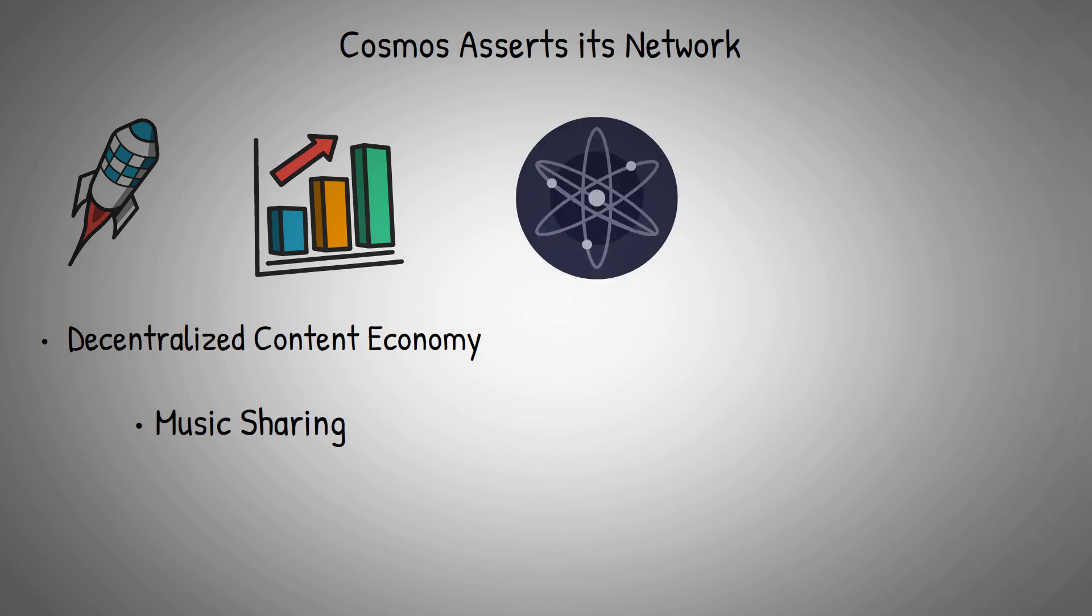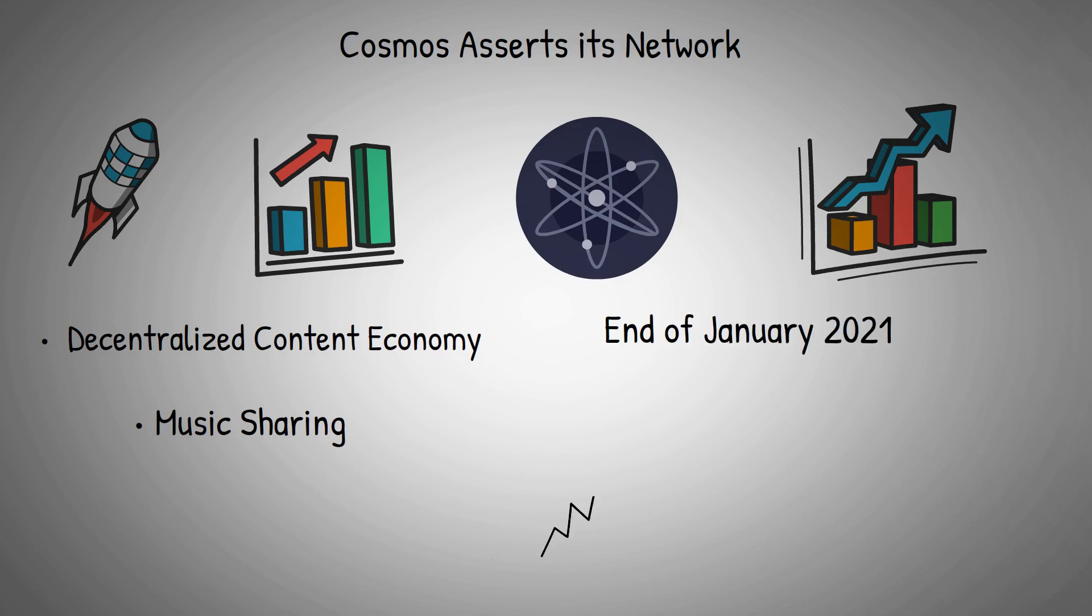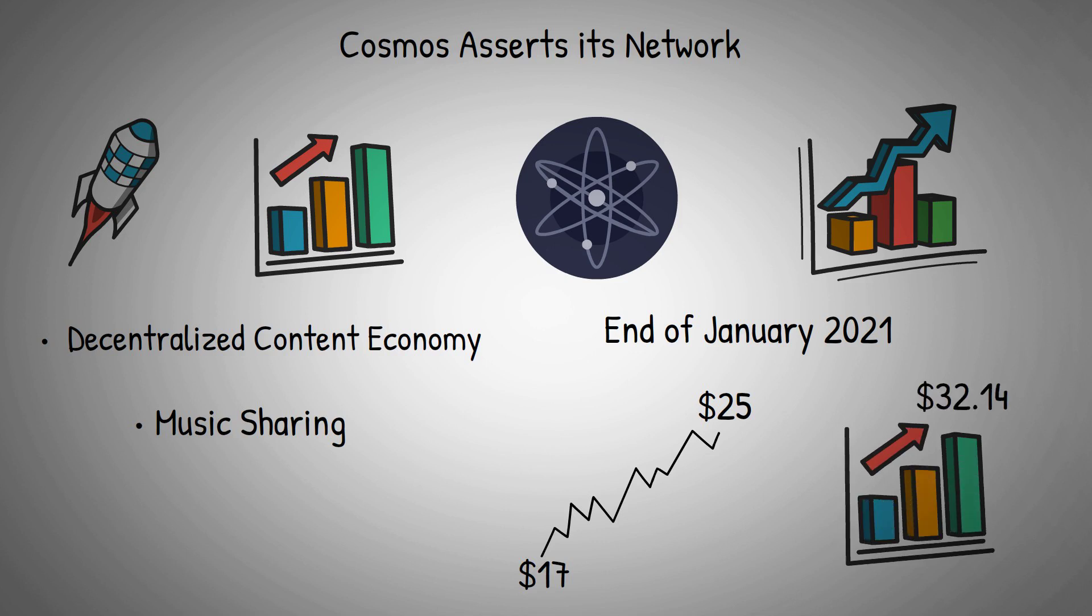Since the beginning of the year, the coin has reflected tremendous momentum. By the end of January 2021, the Atom coin marked a sharp spike to $25, but after that, it plunged to $17. Then last month, Cosmos again marked a massive rally and registered a new all-time high of $32.14. However, recently it faced a sharp decline.